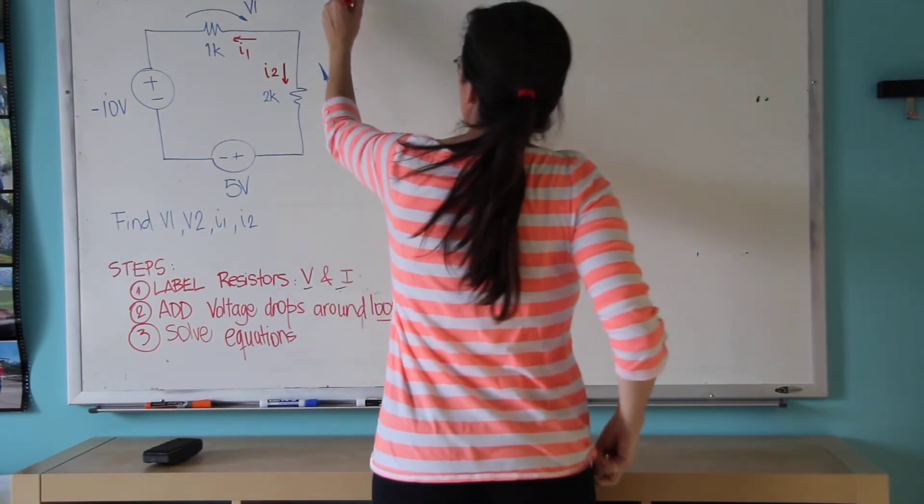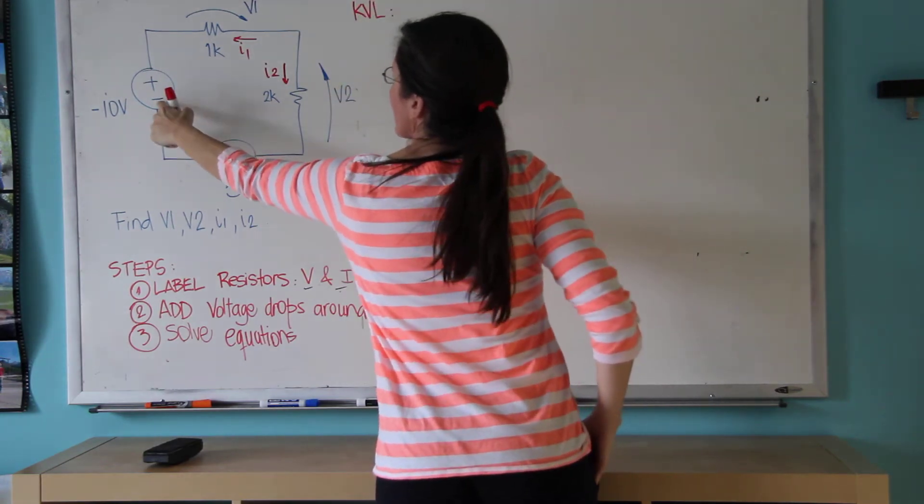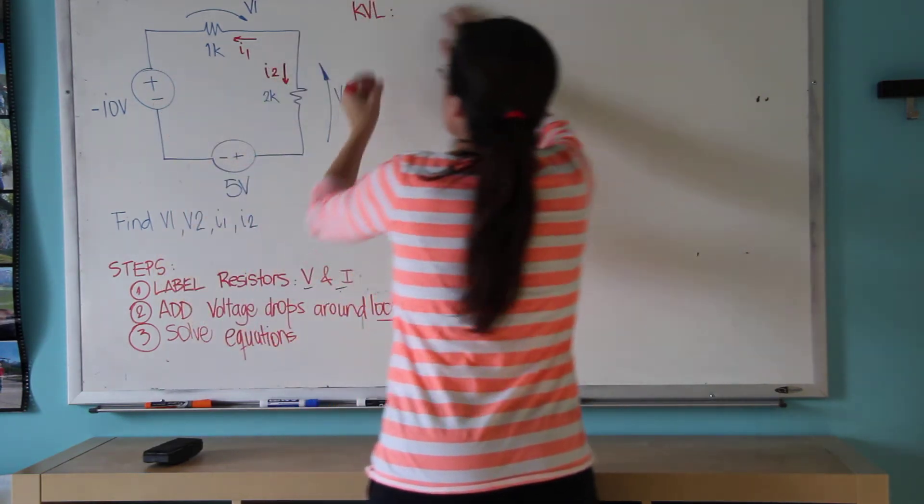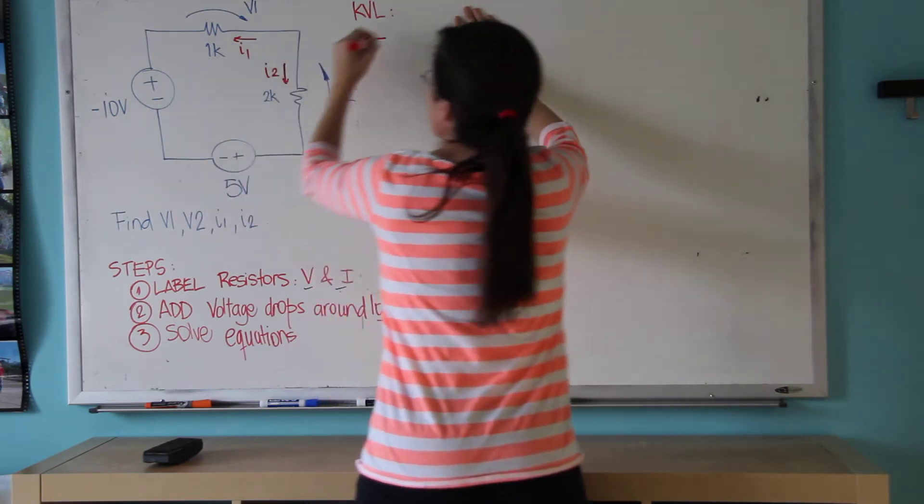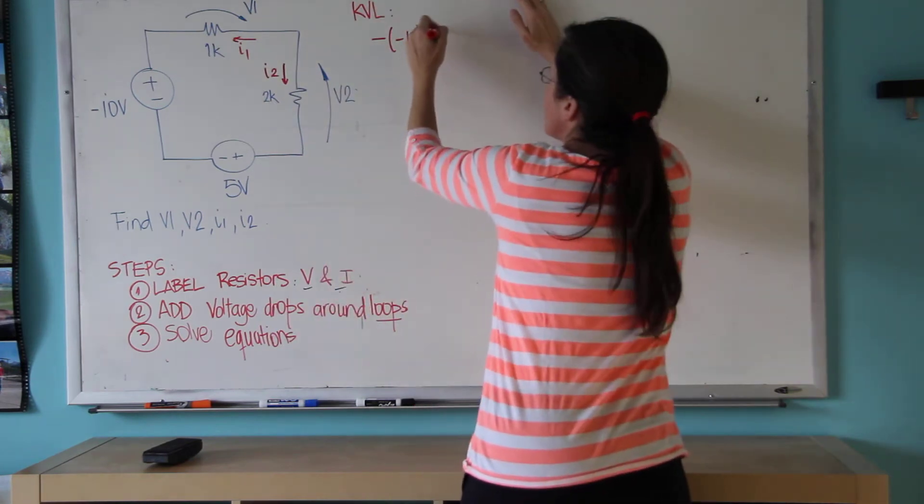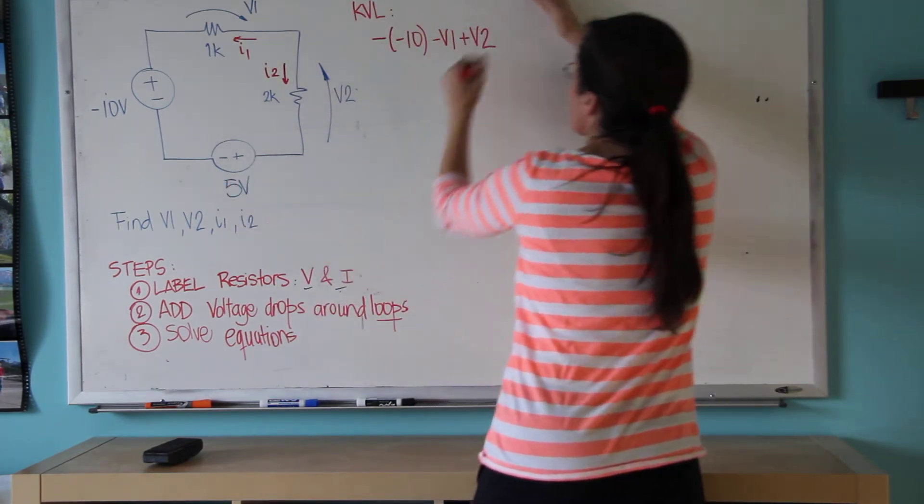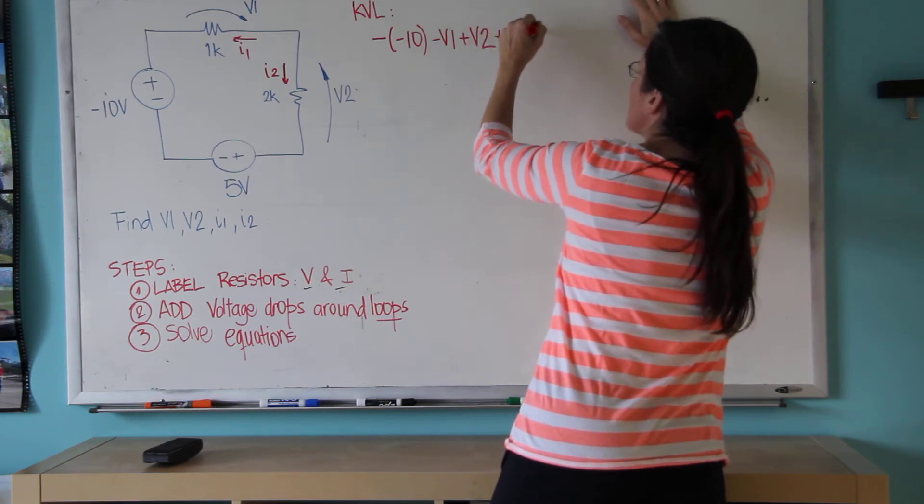I'm again going to use KVL because there's one loop. I'm going to go by here. I find a minus, I write a minus, and then I write the number there, minus 10 with the sign. Then minus V1, plus V2, and plus 5 equals 0.